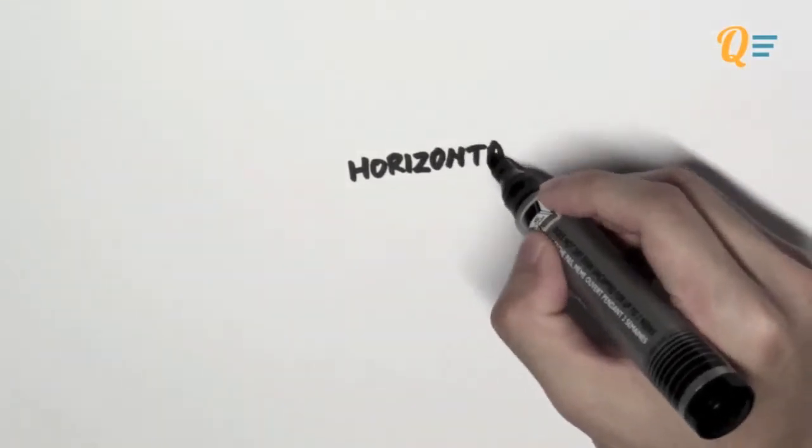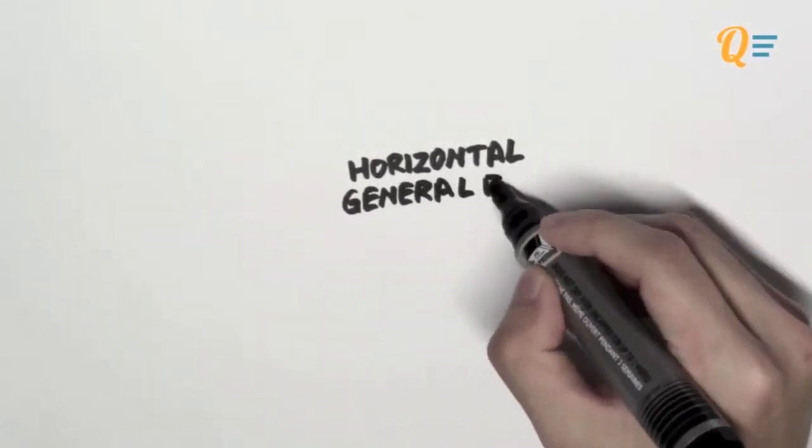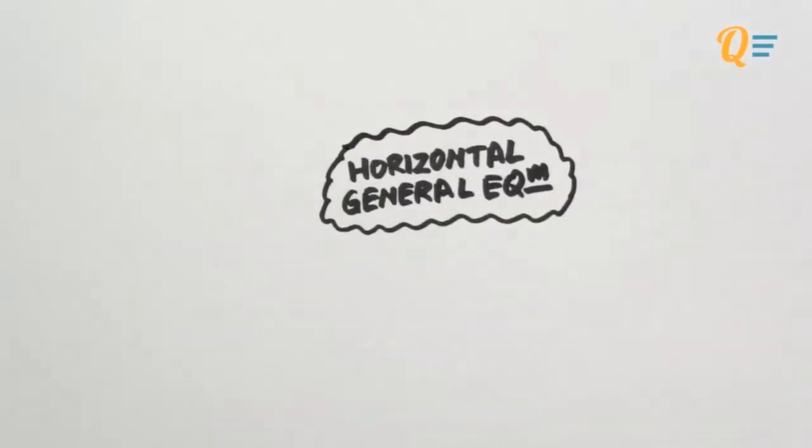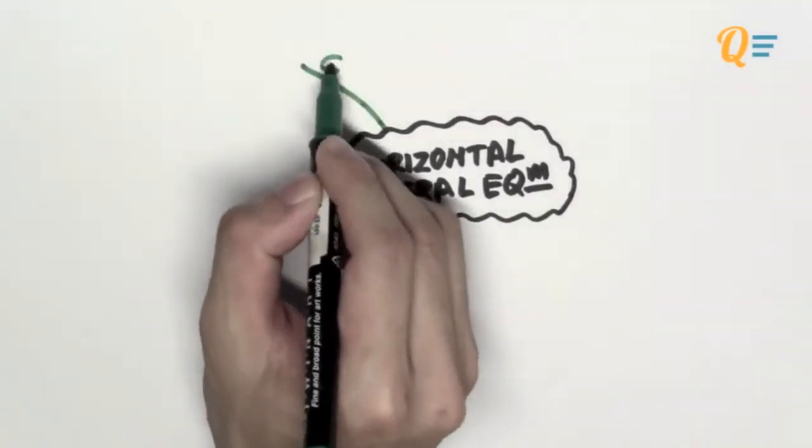Okay, so how we're going to begin Chapter 6 is we're going to start with horizontal general equilibrium. Before we get into this, we need to know exactly what is general equilibrium.